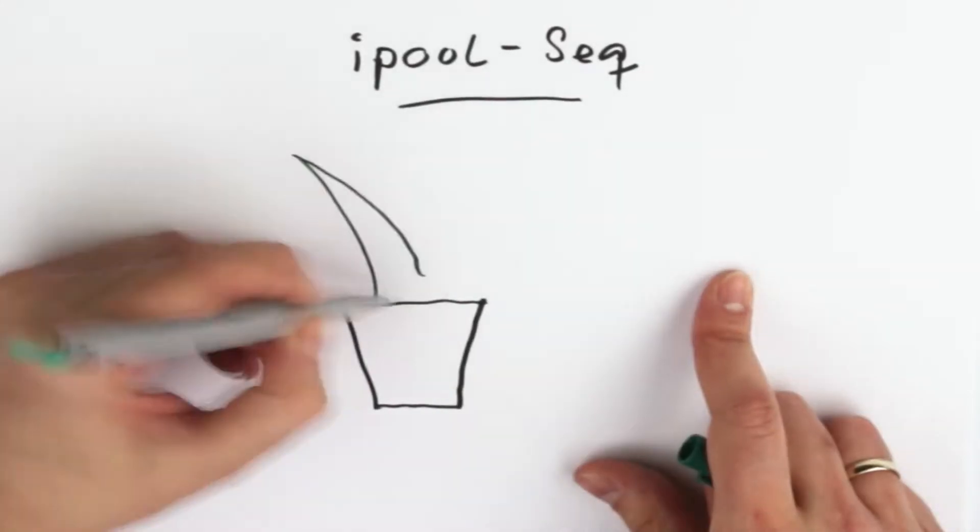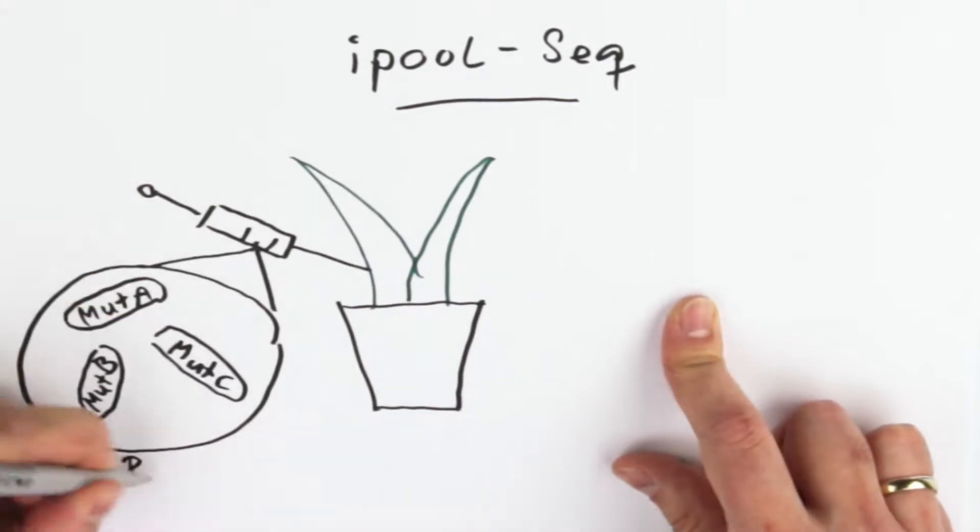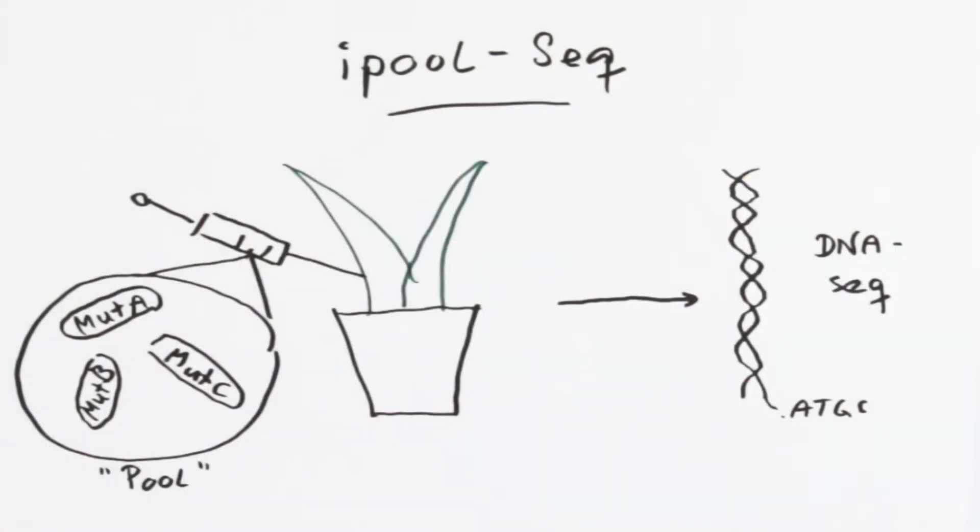To make the process more efficient, I designed iPoolSeq. With this technology, I can infect hundreds of mutants in a pool and assess the virulence based on DNA sequences.